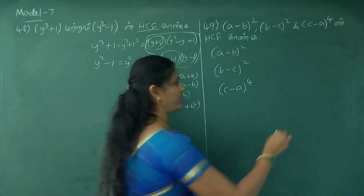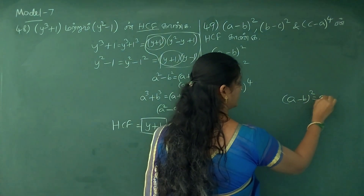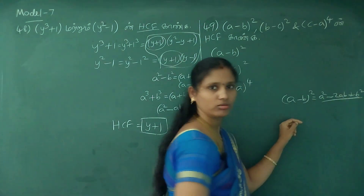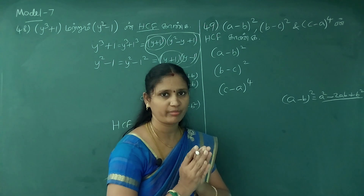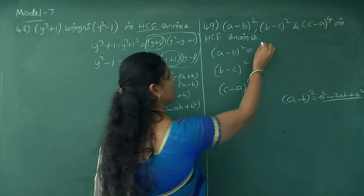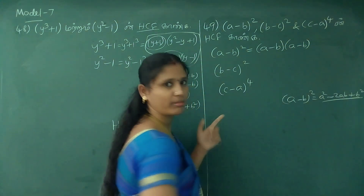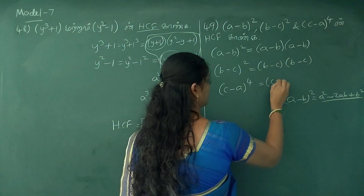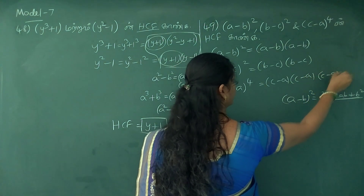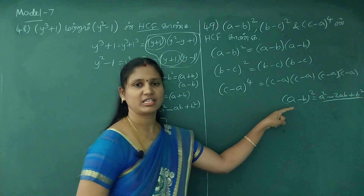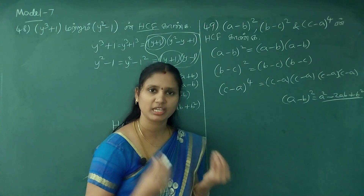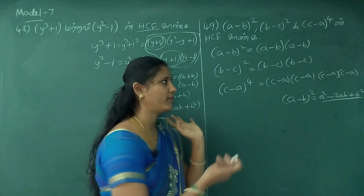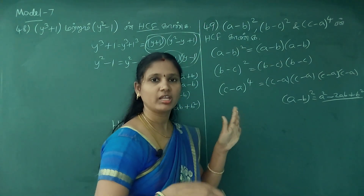So you can see this expansion: a minus b the whole square equals a squared minus 2ab plus b squared. So you can see a minus b into a minus b. When you have two times, I multiply it. But if you see it, there is a number of 3.